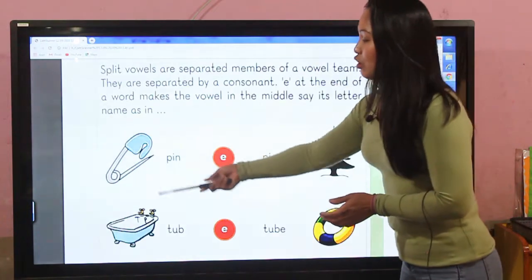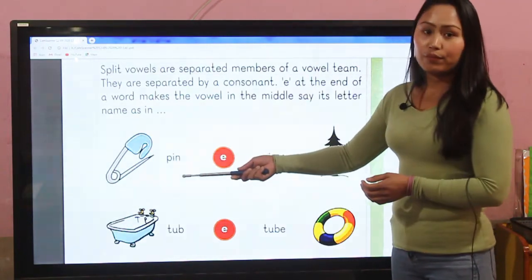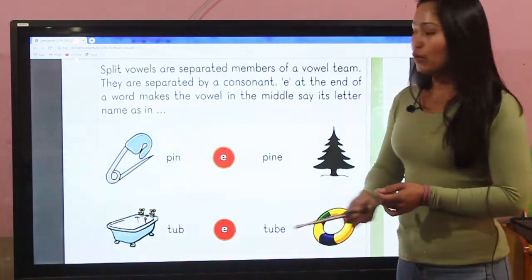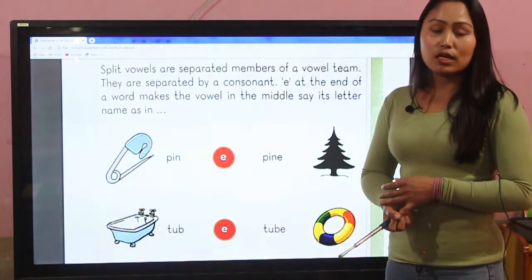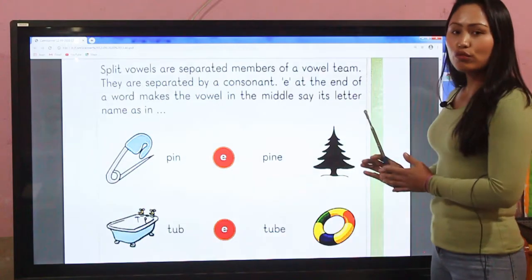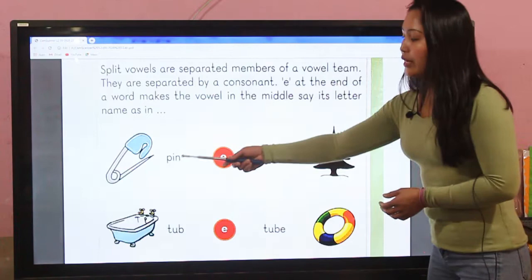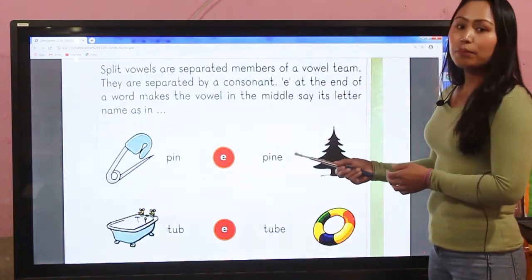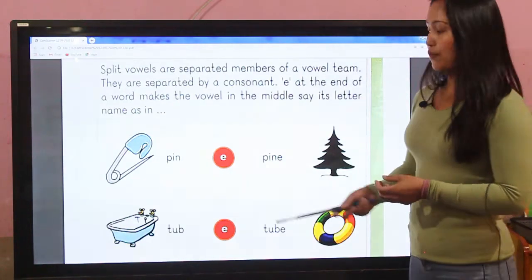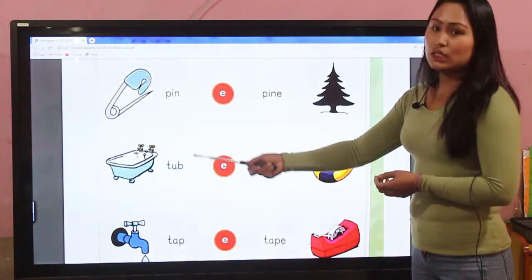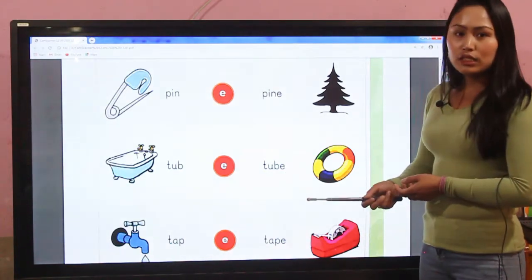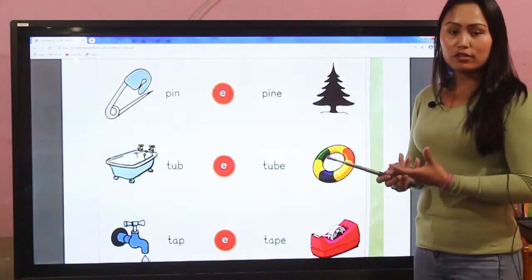Here is the picture of pin, p-i-n. P and n are the consonant letters and i is the vowel. When we add e at the end, p-i-n becomes pine. Similarly, t-u-b becomes tube when we add e at the end.